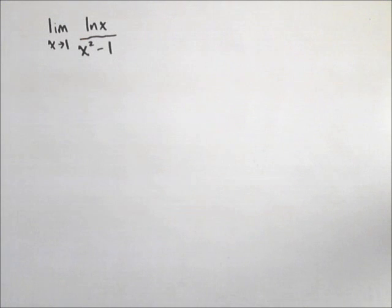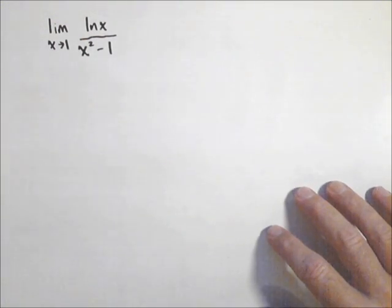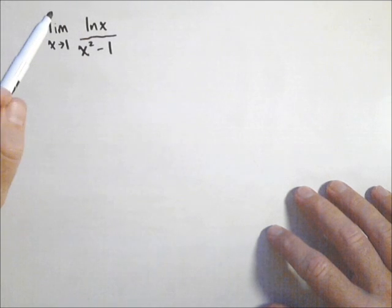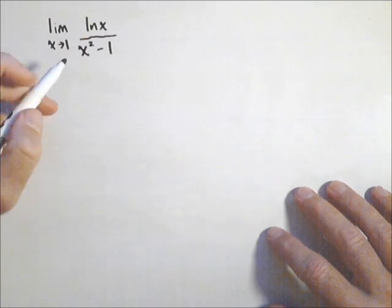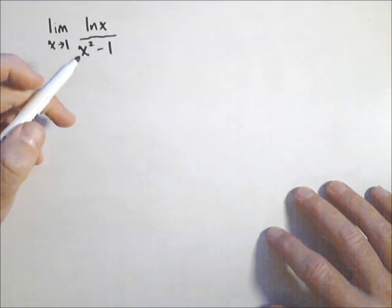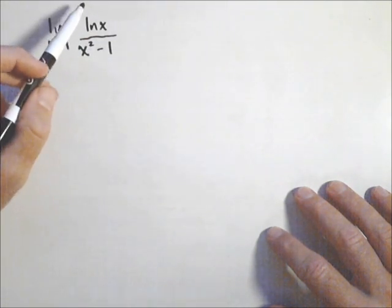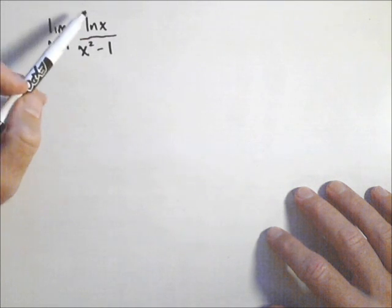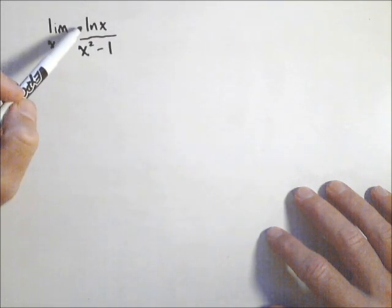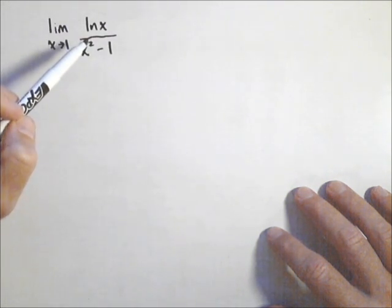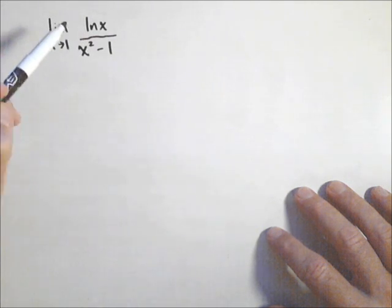In this video, we're gonna do a few examples involving L'Hopital's Rule. L'Hopital's Rule is a really useful technique for solving limits when we have an indeterminate form. If you can put the function that you're taking the limit of into a form where you get zero over zero or infinity over infinity, it's an indeterminate form.